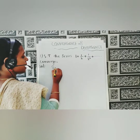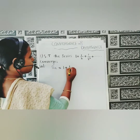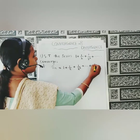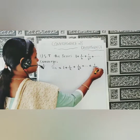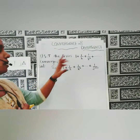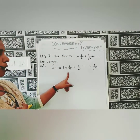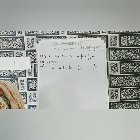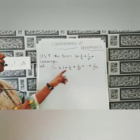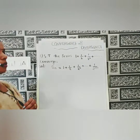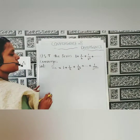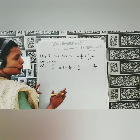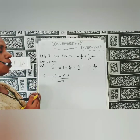The nth partial sum of the given series is s_n = 1 + 1/2 + 1/2² + ... + 1/2^(n-1). Now we want to calculate the sum of this series. This series is a geometric series with common ratio r = 1/2.